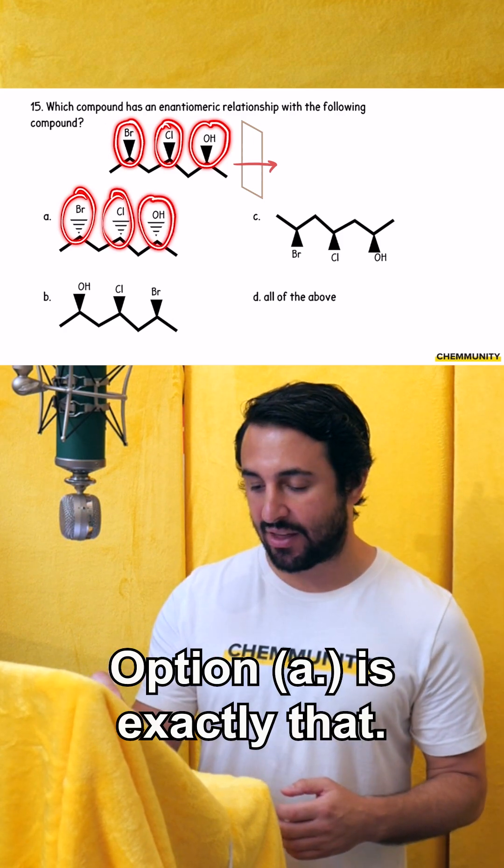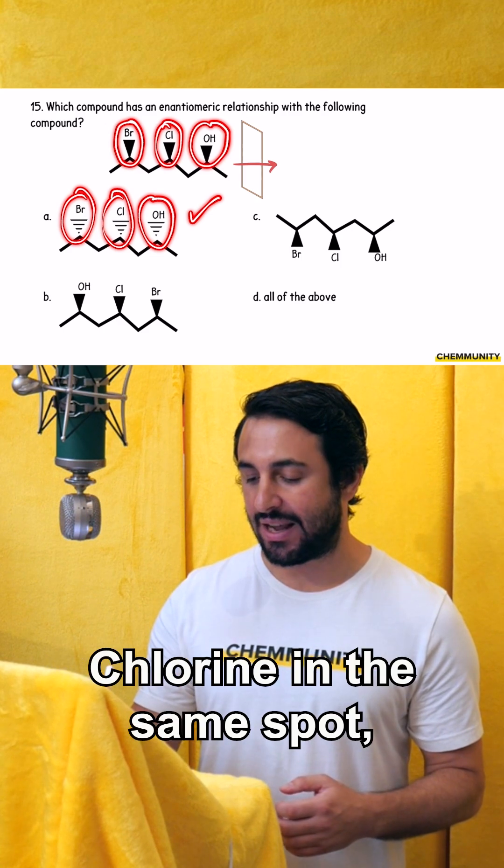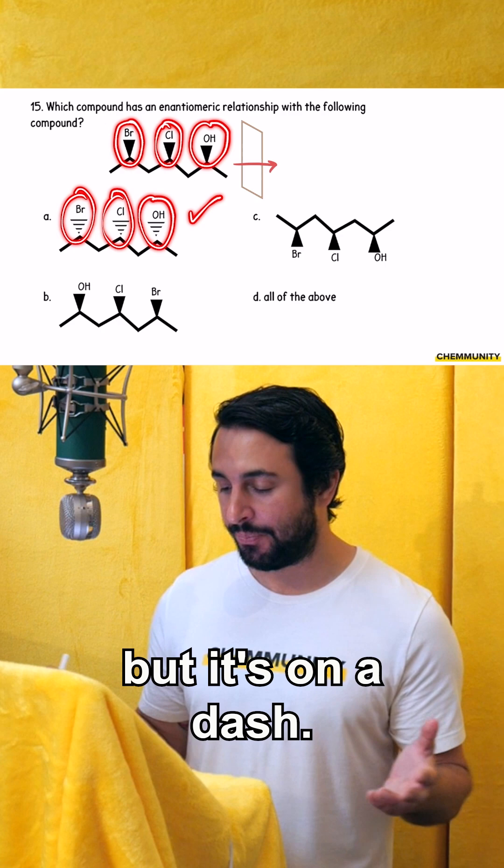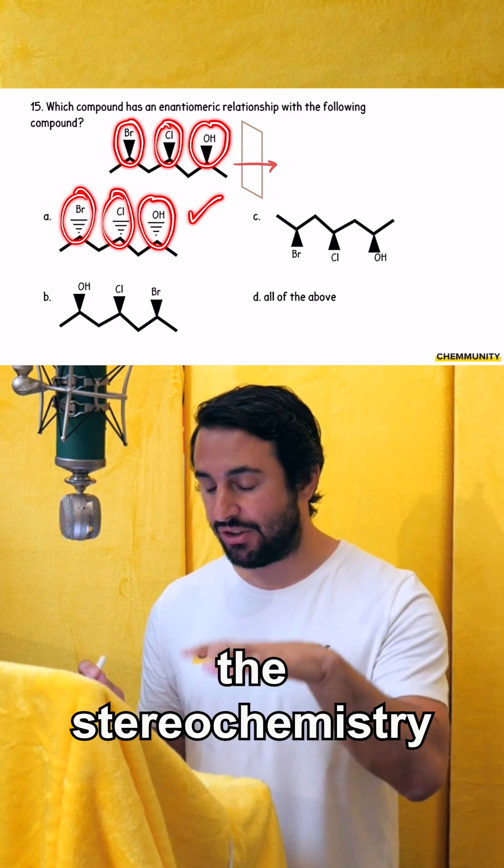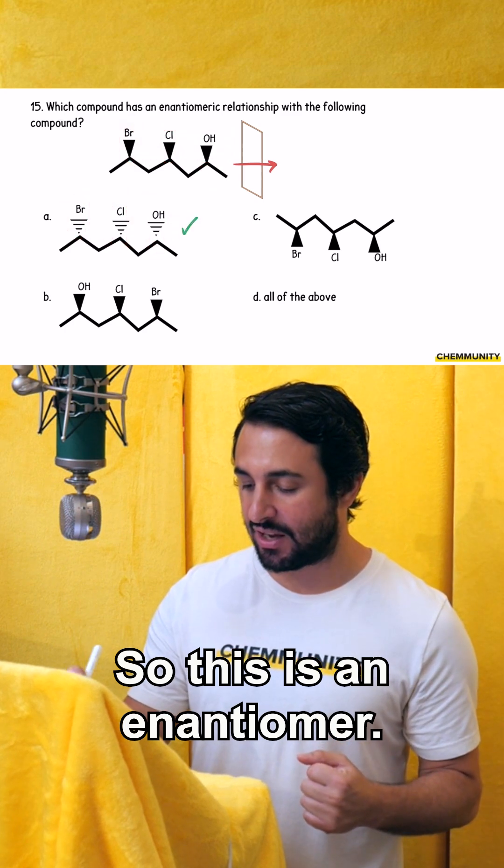Option A is exactly that. We have bromine in the same spot, but it's on a dash. Chlorine in the same spot, but it's on a dash. Hydroxyl in the same spot, but it's on a dash. We definitely have inverted the stereochemistry at each of those three chiral centers. This is an enantiomer.